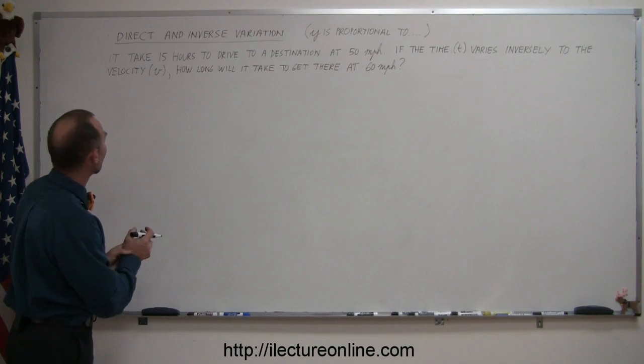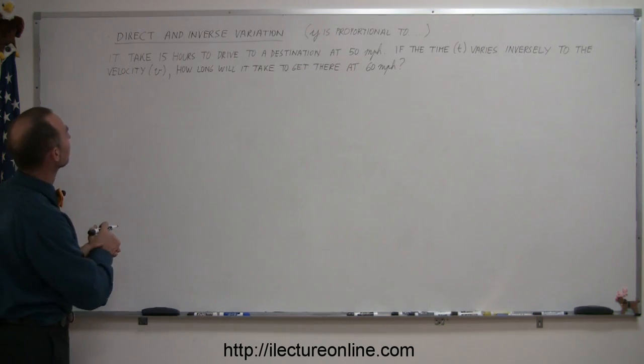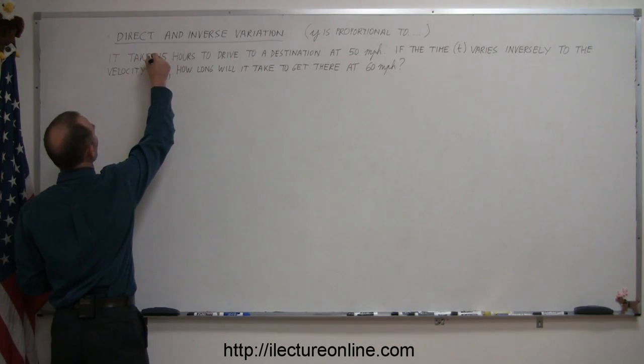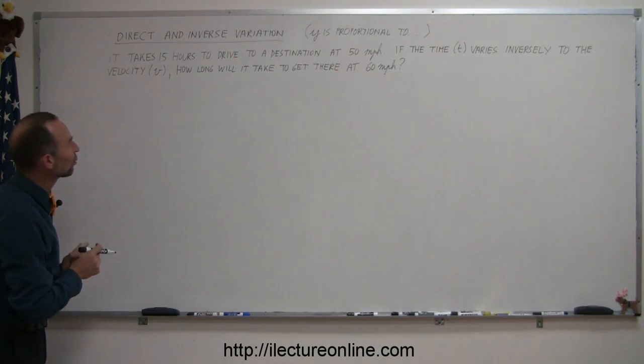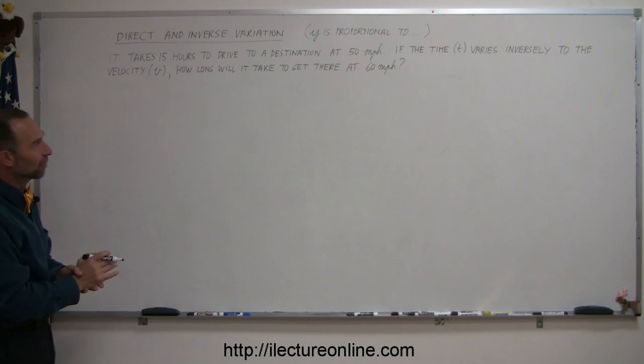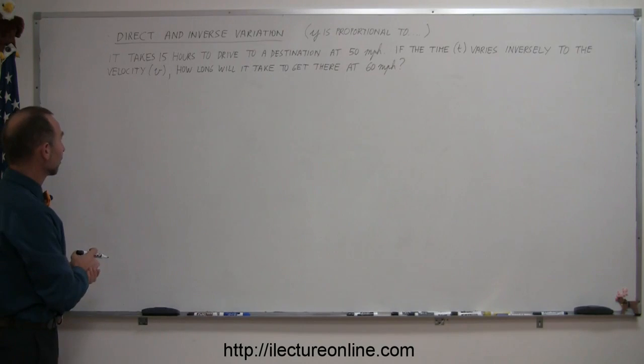In this case, let's read the problem. It says that it takes 15 hours to drive to a destination at 50 miles per hour if the time t varies inversely